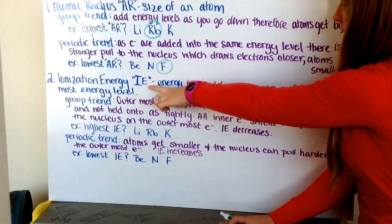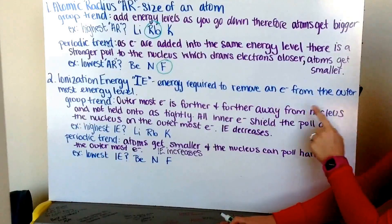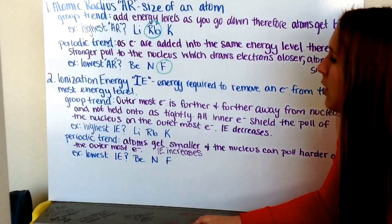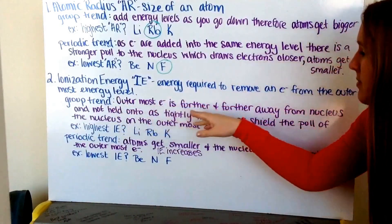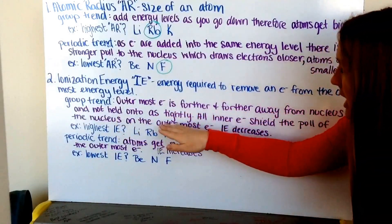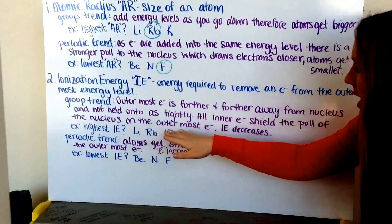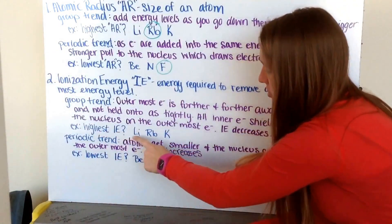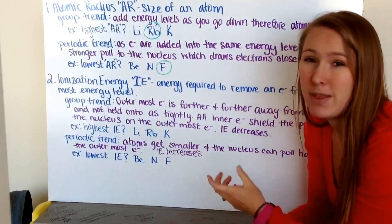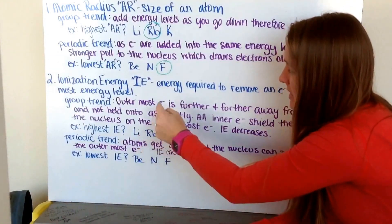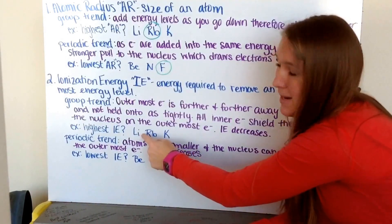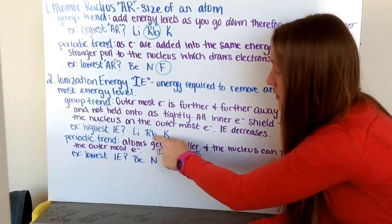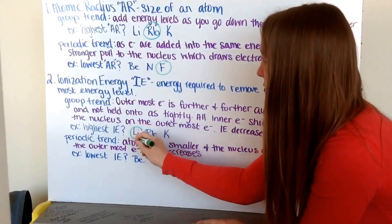The next trend is ionization energy, abbreviated as IE — this is the energy required to remove an electron from the outermost energy level, or how difficult it is to pluck that outermost electron away from the atom. As I go down my group, my outermost electron becomes further and further away from the nucleus and therefore not held onto as tightly. All my inner electrons shield the pull of the nucleus on the outermost electron. Therefore, my ionization energy decreases. Of lithium, rubidium, and potassium, lithium has its outermost electron very close to the nucleus whereas rubidium is very far away, so the one hardest to remove an electron from is lithium.